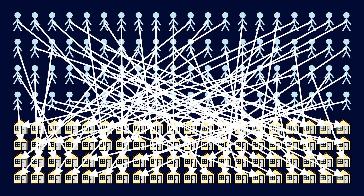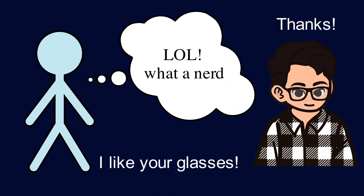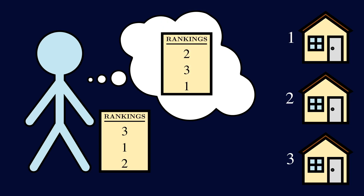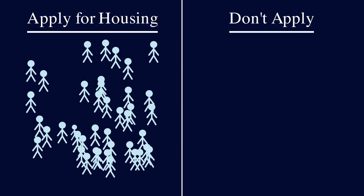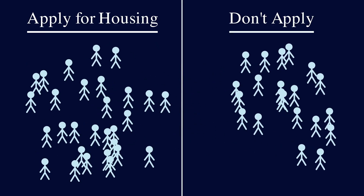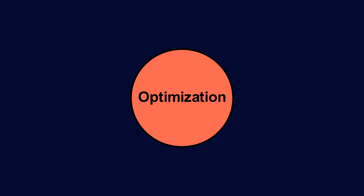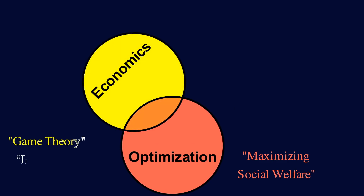But defining a good matching is not the trickiest part. We have to deal with the possibility that people report preferences that they don't actually believe, as a way to game the system. We also want to design a system that incentivizes participation. Otherwise, people may choose not to switch dorms or to find off-campus housing, which is something we'd like to avoid. So although this is an optimization problem with a goal like maximizing social welfare, there's also an economics part that deals with game theory and people's incentives.